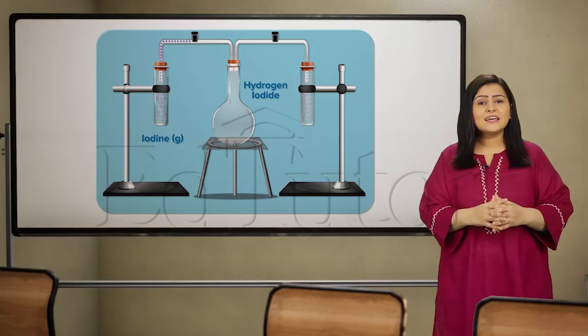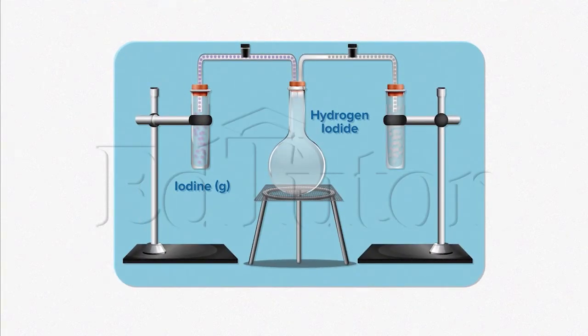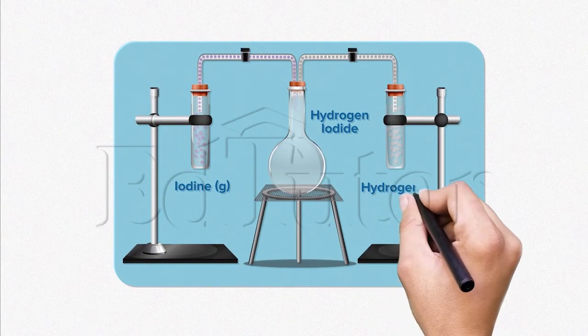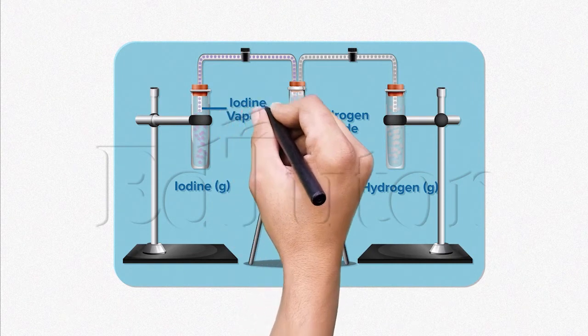Now, let's take a look at this image. In this experiment, hydrogen and iodine vapor will be placed in a closed flask.